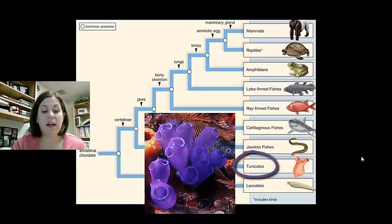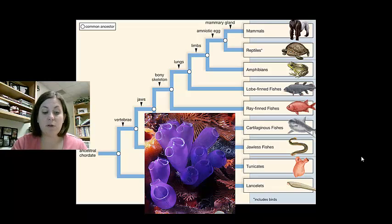Tunicates, on the other hand, are the next group and they are in the subphylum urochordata. They also live in the ocean and are also known as sea squirts. The tunicates' larvae display all four characteristics of chordates, but they undergo metamorphosis and as adults, they only retain the gill slits. They become then sessile filter feeders at this point.